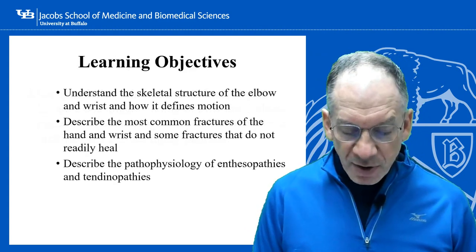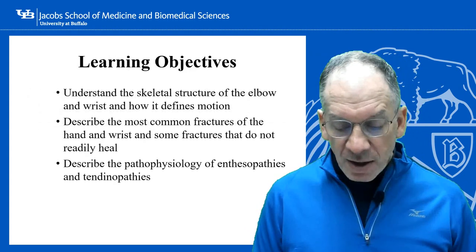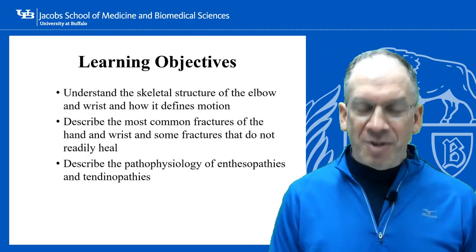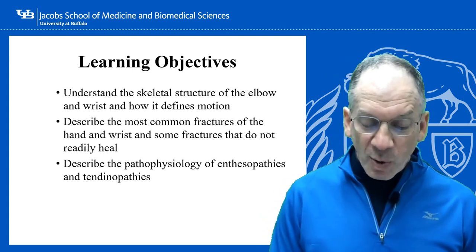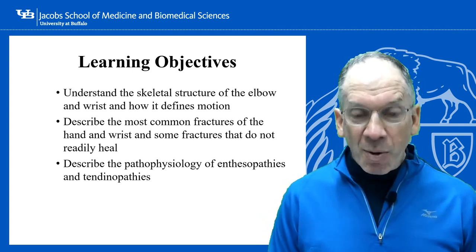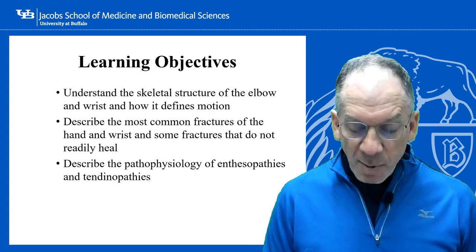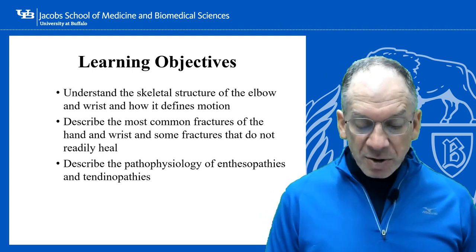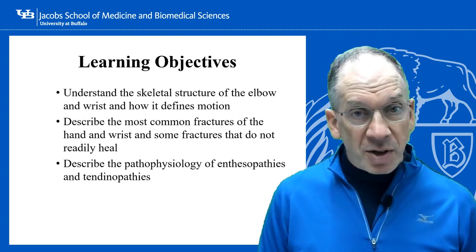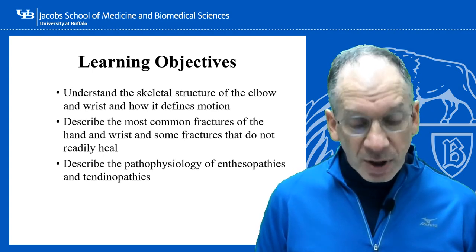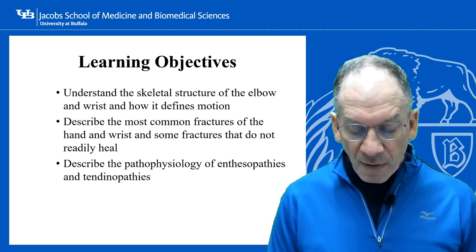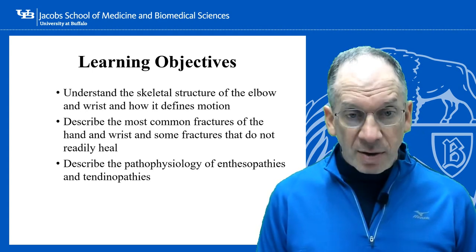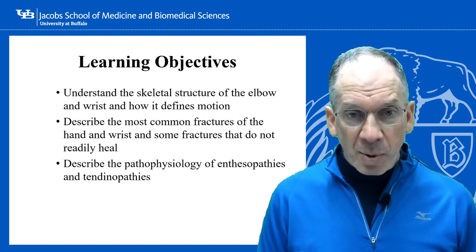The learning objectives. Understand the skeletal structure of the elbow and wrist and how it defines motion. Describe the most common fractures of the hand and wrist and some fractures that do not readily heal. And lastly, describe the pathophysiology of enthesopathies and tendinopathies.